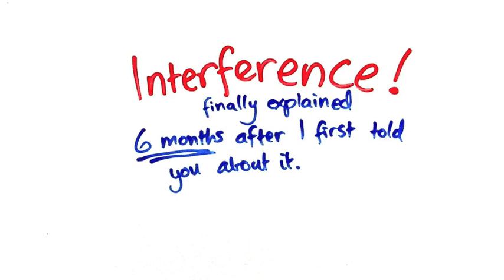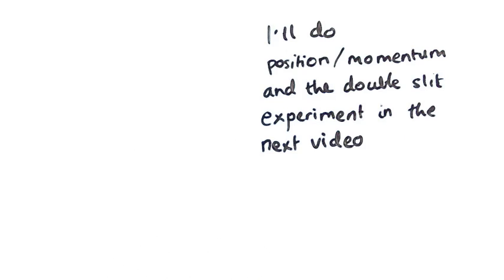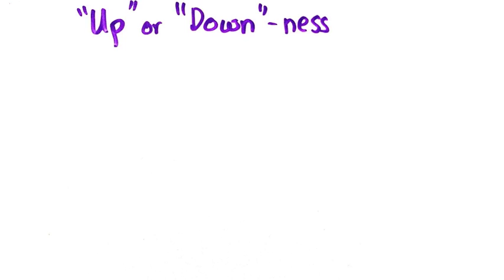To illustrate all this, I'm going to use a toy model that's nice and simple, then I'll explain how to do it in the really interesting cases later. Say there's an observable called the up or downness of a particle.